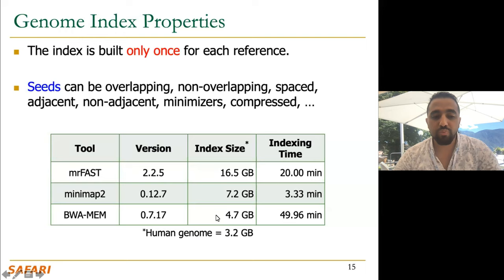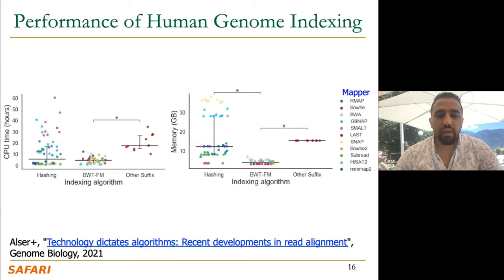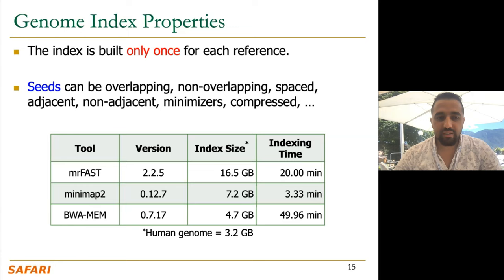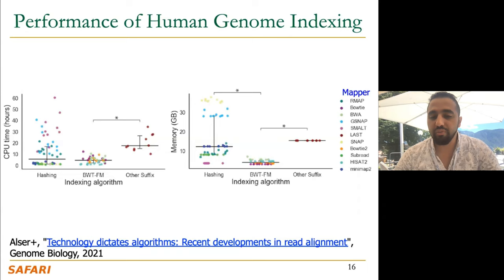There are really different types of seeds such as overlapping, non-overlapping, spaced, adjacent, non-adjacent, minimizers, and so on, and we survey most of these seed types in our paper. The indexing performance is really different between tools. There are three main types: hashing, Burrows-Wheeler transformation with FM index, and suffix-based methods.